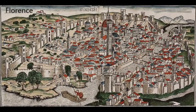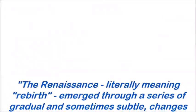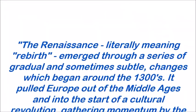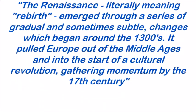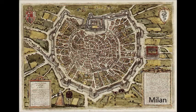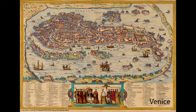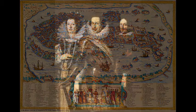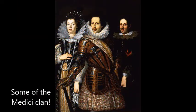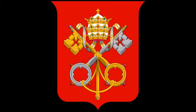This was during the period we refer to as the Renaissance. The Renaissance, literally meaning rebirth, emerged through a series of gradual and sometimes subtle changes which began around the 1300s. It pulled Europe out of the Middle Ages and into the start of a cultural revolution, gathering momentum by the 17th century. Italy was at the centre of this rebirth, but it's important to note that Italy was not one unified country during this period — it was a collection of city-states like Florence, Milan and Venice. There were different leading families who dominated Italy's political sphere, like the House of Medici and the House of Sforza.